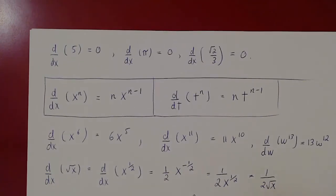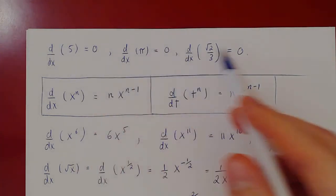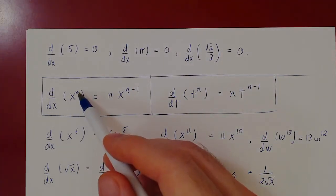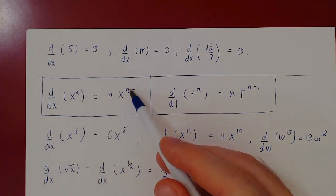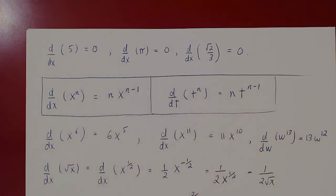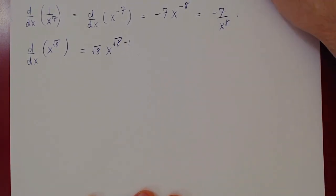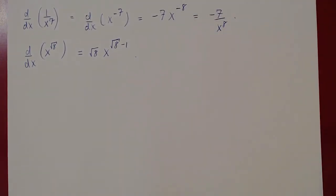So now we can differentiate a constant — the derivative of a constant is always equal to zero. And if you differentiate a power of x, you bring the exponent down and subtract 1 from the exponent. Now we can ask: what about the derivative of a sum or difference of two functions?